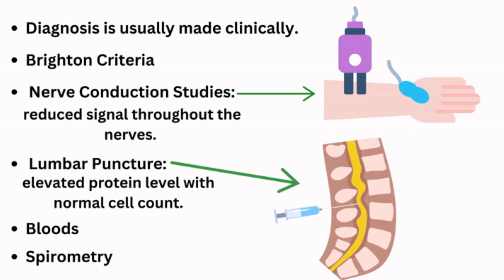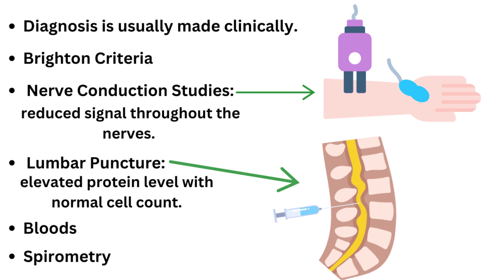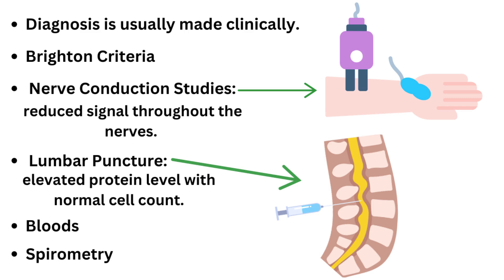Diagnosis of Guillain-Barré syndrome is usually made clinically. There is no specific test that confirms a definitive diagnosis. The Brighton criteria can be used for diagnosis and supported by investigations such as nerve conduction studies, which show reduced signal throughout the nerves, and lumbar puncture to test the CSF. CSF analysis classically shows an elevated protein level with a normal cell count. Bloods can be taken to identify the underlying trigger, and bedside spirometry is done every 6 hours due to the potential for rapid progression and involvement of the respiratory muscles.